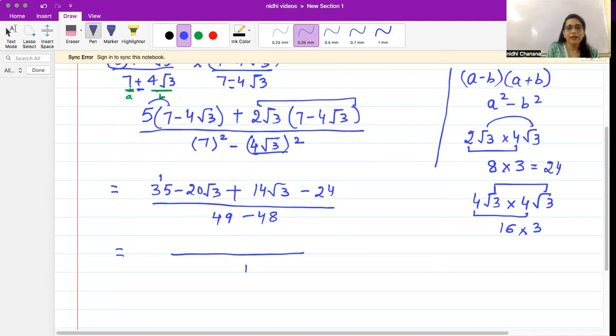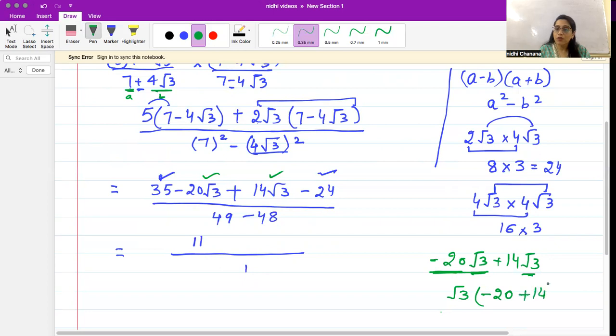Numerator: we have 35 here. First we take the normal numbers, the constants: 35 minus 24 gives us 11. Now these two terms with √3: we have -20√3 + 14√3. What is common in both? One thing common is √3, so I am taking √3 outside. What's left inside? Minus 20 and plus 14. So when you solve this, -20 + 14 gives you -6. So we have 11 - 6√3 over 1. Denominator is 1.